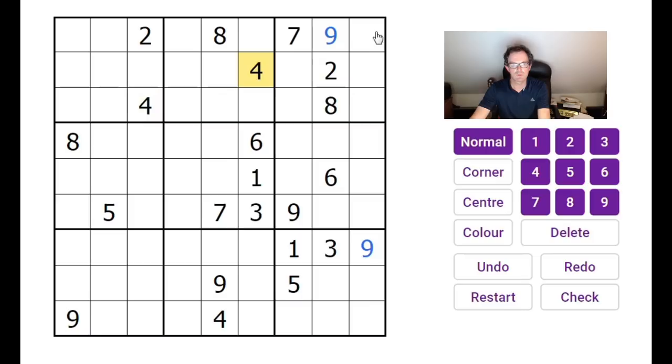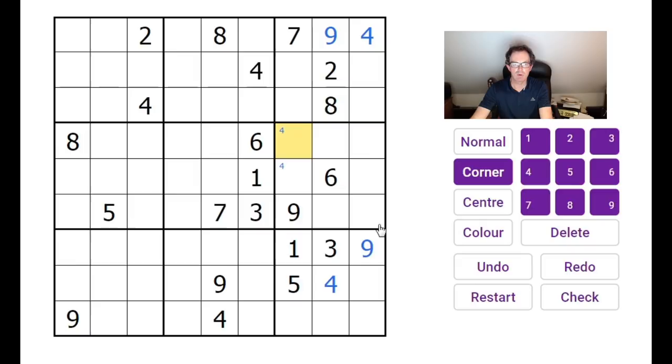Now, this has got to be a nine because of these two nines here. Therefore, that's a nine. Fours, look, that's going to be a four. Therefore, this is a four because of the four in the bottom row. Pencil mark fours like that. As usual, if I pencil mark fours in corners, that means I'm looking at three by three boxes regarding that notation.